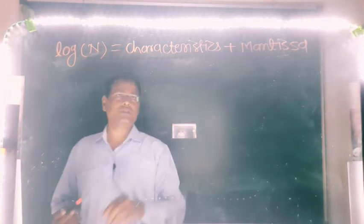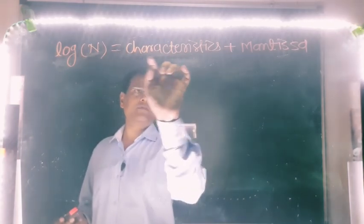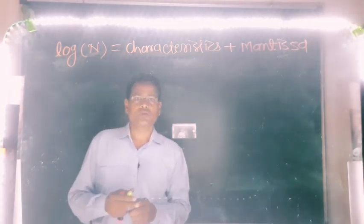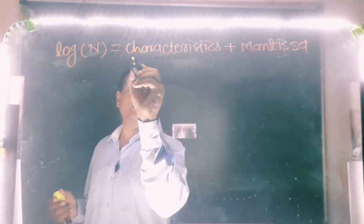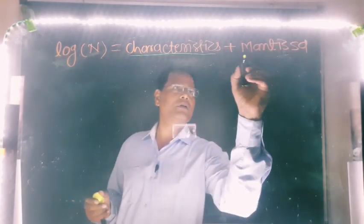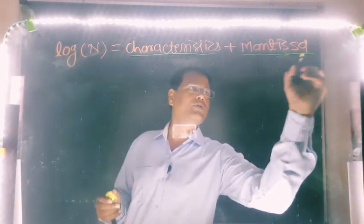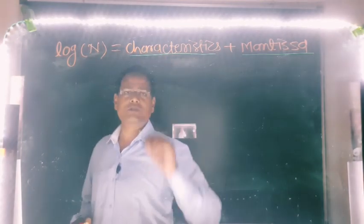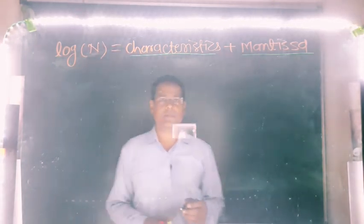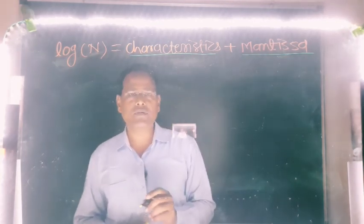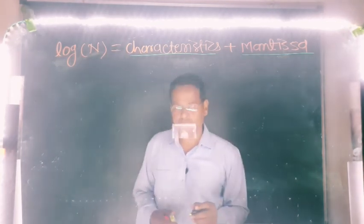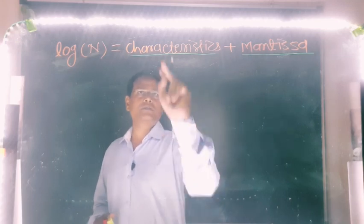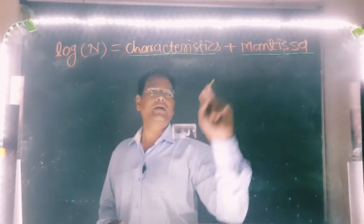So next we have to study the actual use of the log table. First we have to discuss how we can find the characteristics of a given number, and then we have to use the actual log table to find the mantissa. To find the log of any number, we have to find two parts: first characteristics and then mantissa.